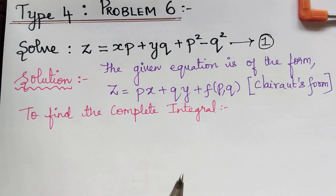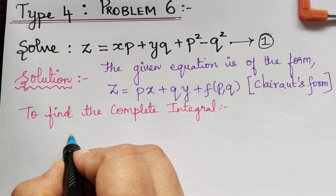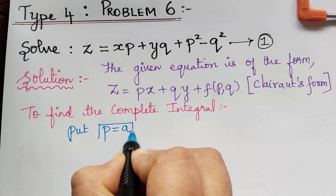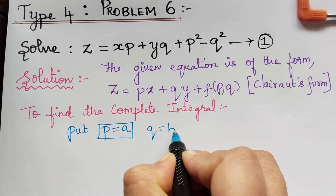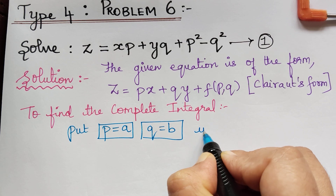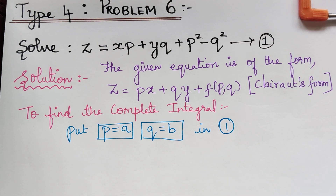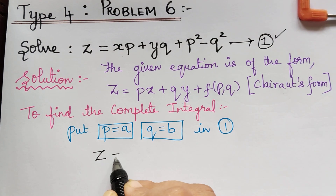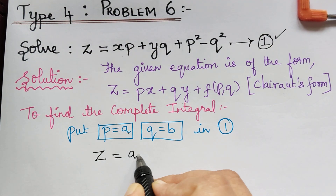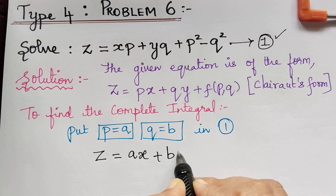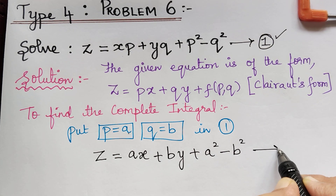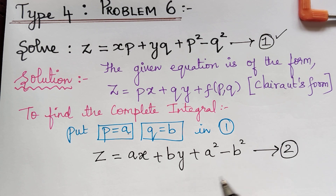To find the complete integral, we shall put p = a and q = b in equation 1. So when we replace p as a and q as b in equation 1, we get z = ax + by + a² - b². So this gives us the complete integral.